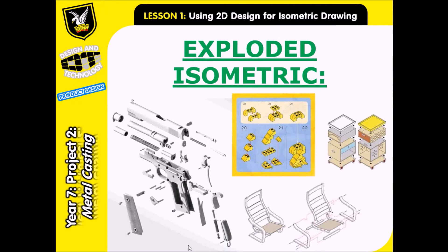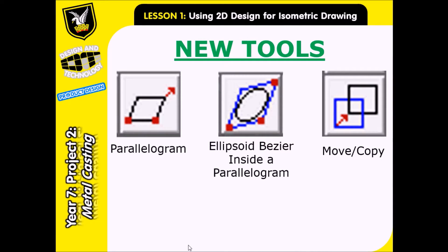We also like to use isometric for creating what we call exploded drawings - that's when we take an object and want to see its different component parts and how they fit together. Lego is a really good example: we want to see the different pieces and how they slot in with each other. Similarly for IKEA furniture we want to see how the different parts fit together. For this task we're going to use a few new tools: the parallelogram, the ellipsoid bezier inside a parallelogram, and also the move and copy tool. Let's get started.